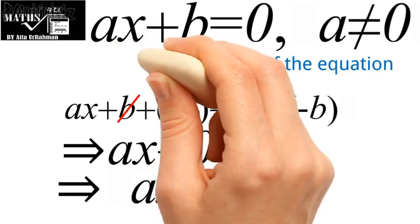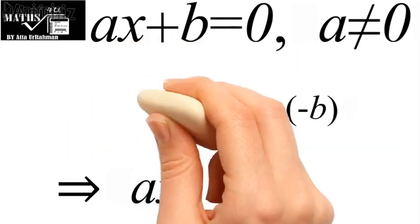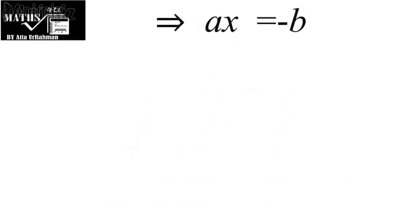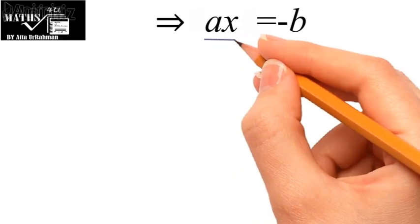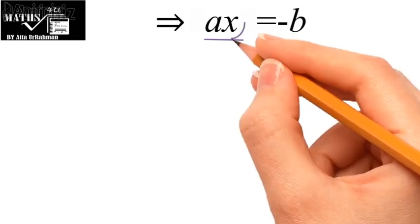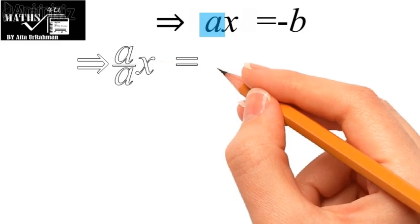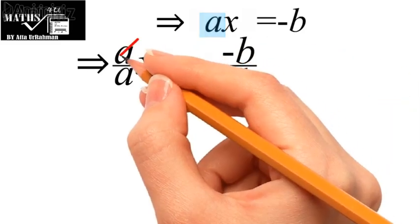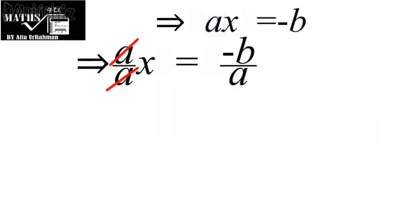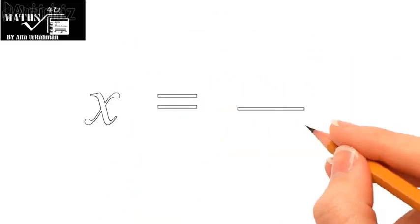Now we have almost done. In the left hand side we have ax and on the right we have minus b. We want to isolate x, so we will divide throughout this equation by the coefficient of x, that is by a. In the left, a divided by a will cancel each other, and we finally find the root of the equation: x is equal to minus b upon a.